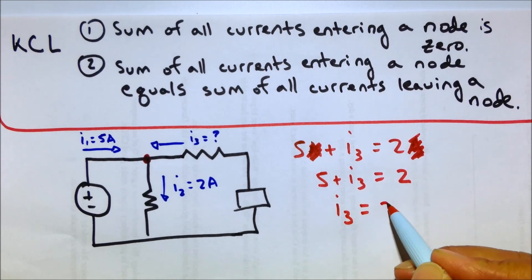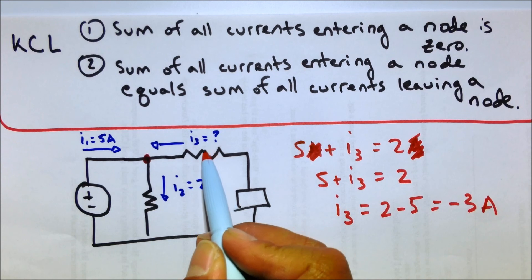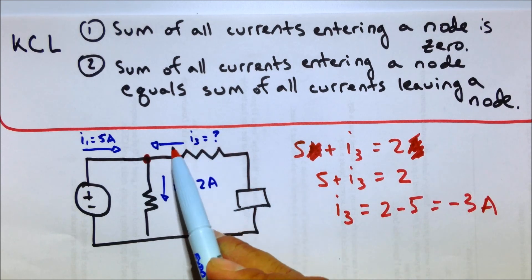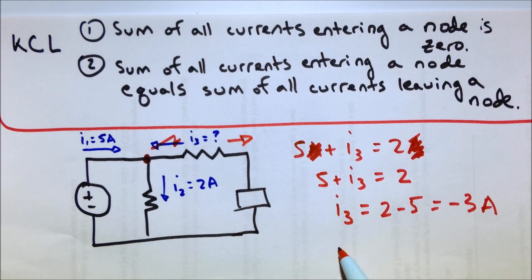I3 equals two, hey, what do you know? Minus three amps. So what that means is that because we labeled it going this way, and the current is actually flowing out of the node, then we kind of mislabeled this. The current is actually flowing in that direction, all right?